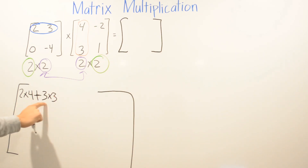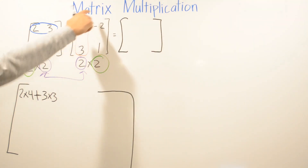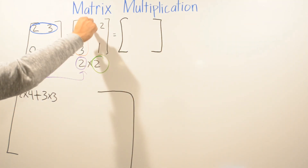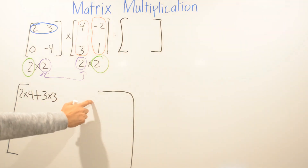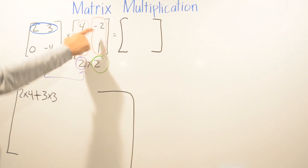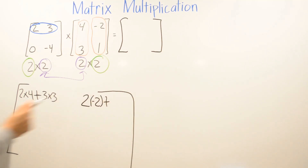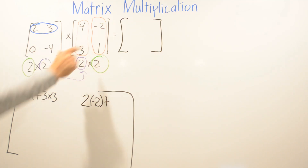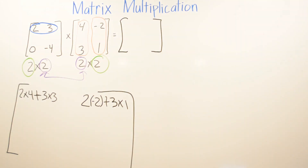That gives us one corner of the result matrix. Then for the next corner, we go to the next column of the second matrix and multiply the first row by it. That gives us this corner here.